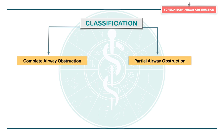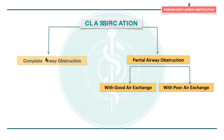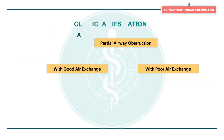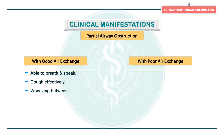Partial obstruction can further be subdivided as partial obstruction with good air exchange and partial obstruction with poor air exchange. When there is good exchange of air, the patient is able to breathe, speak, and cough effectively, while wheezing between the coughs.